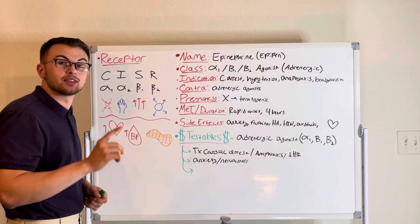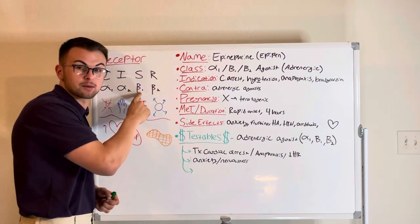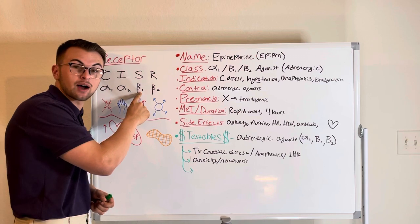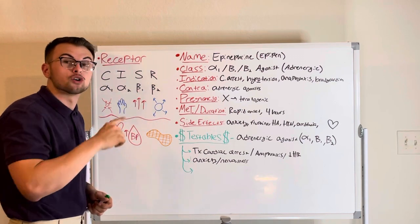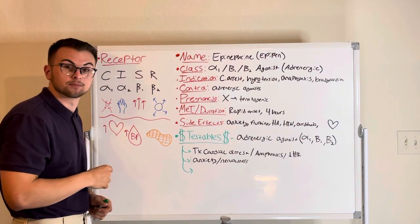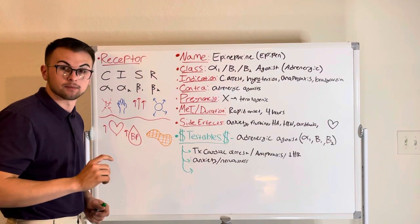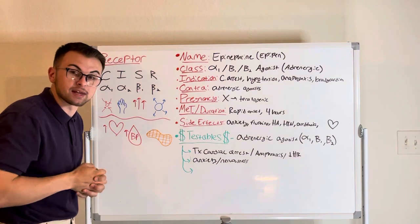Next, they will bind to beta-1 receptors. These are mainly found in the heart, and they increase our heart rate, our dromotropy, or speed of conduction, and inotropy, or how hard our heart beats.